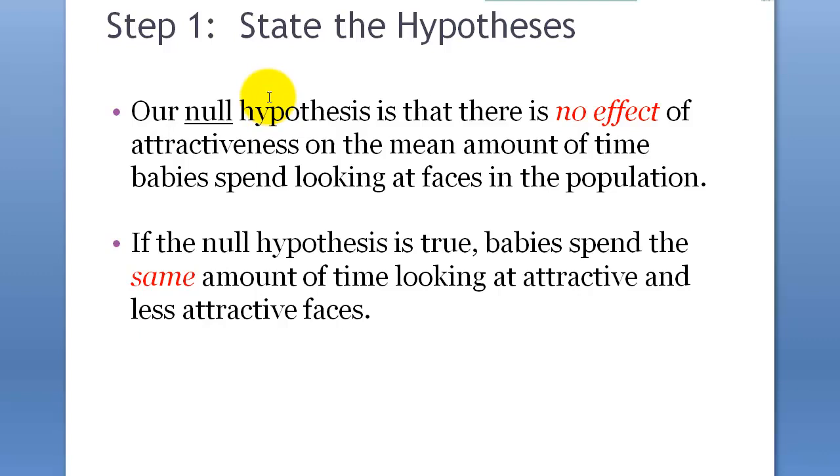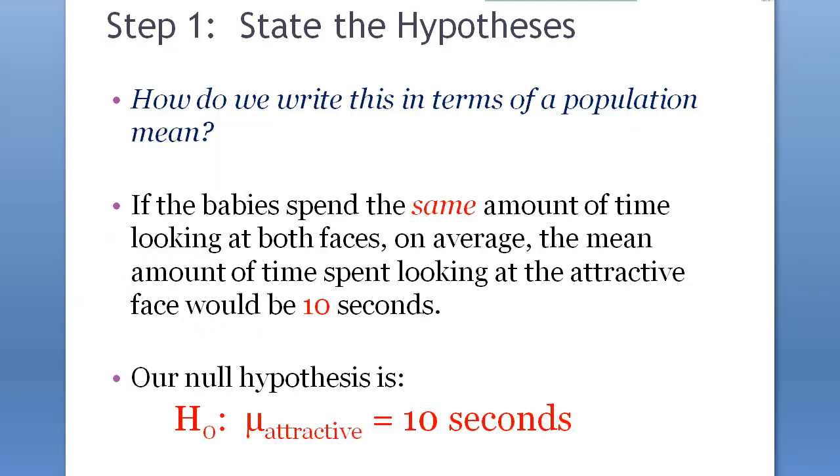So, null hypothesis and also alternative hypothesis, it's going to be no effect or some effect. Mu of attractive face would be, because we are exposing babies to the two different faces for 20 seconds. If there's no difference, which is no hypothesis, maybe we'll look at each face for 10 seconds. So we can make a statement like this: mu attractive equals to 10 seconds.